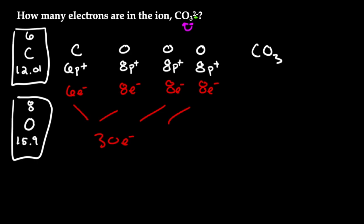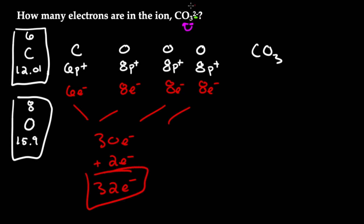We also have the negative 2 charge. Since 30 electrons would be neutral, we need two more electrons to get a negative 2 charge. So we add 2 electrons, giving us 32 electrons total in one molecule of CO₃²⁻. The answer is 32 electrons.